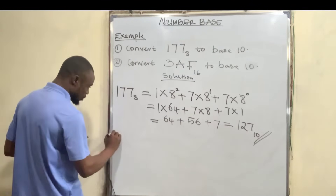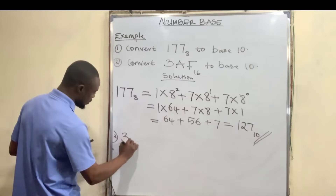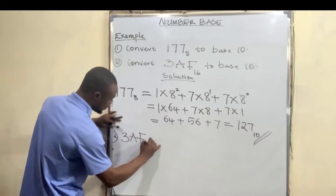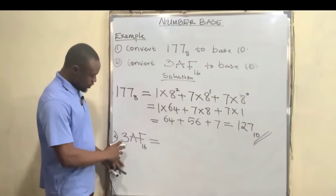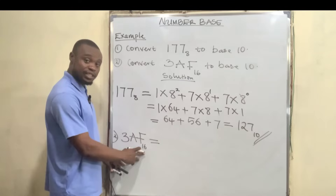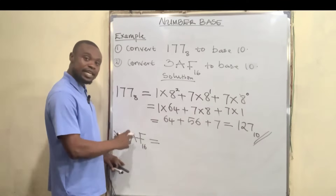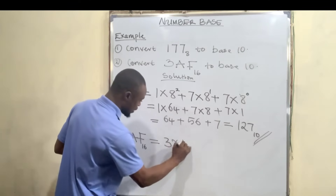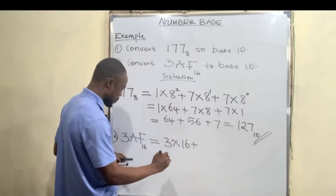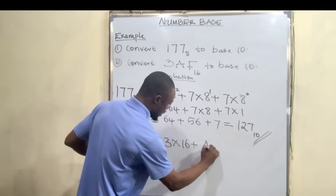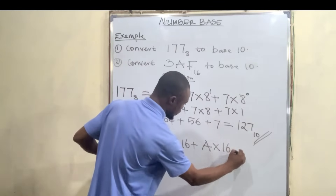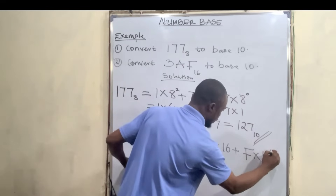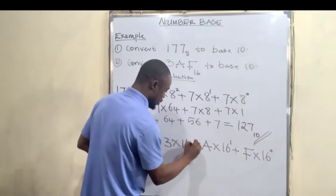The second question is 3AF base 16. What we're going to do here is multiply 3 by 16, A by 16, and F by 16. So we have 3 multiplied by 16, plus A multiplied by 16, plus F multiplied by 16. The power here is 0 for F, 1 for A, and 2 for 3.